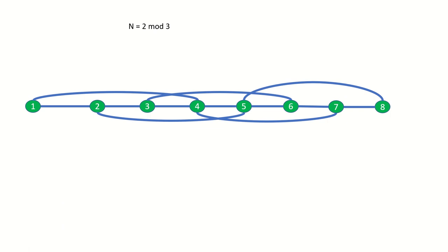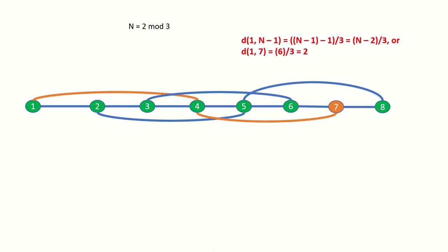This time n equals 8, which equals 2 mod 3. In this case we know that we can get to the penultimate vertex in n minus 2 over 3 steps, found by treating the seventh vertex as the last vertex in a 1 mod 3 graph.